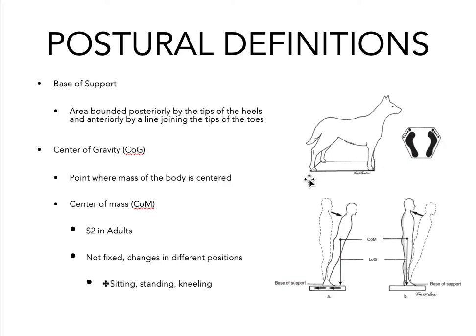The center of gravity is a point where the mass of the body is centered, also known as the center of mass. S2 is typically the center of mass in adults. The center of mass is not fixed — it changes with different positions. When we bend forward, squat down, sit, stand, or kneel, the center of mass changes.